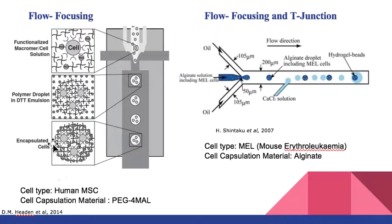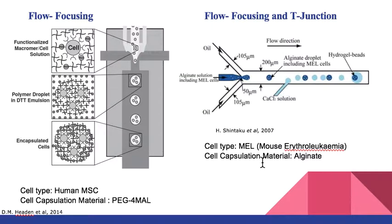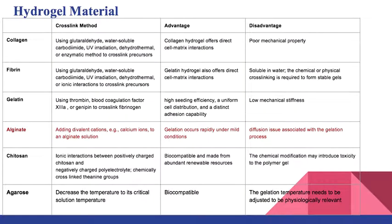These are research examples with successful results encapsulating and culturing human MCS through PEG beads using flow focusing, and on the right side they use flow focusing and T-junction. There are many different materials that can be used as hydrogel beads, but the most common is alginate, whose cross-linking method is simple.